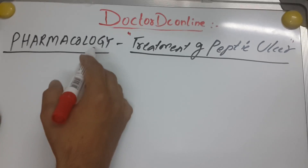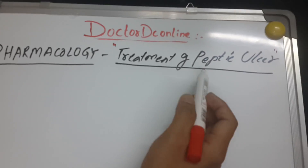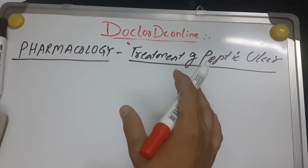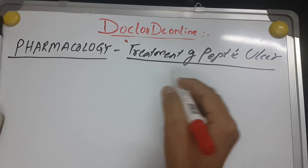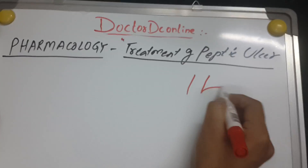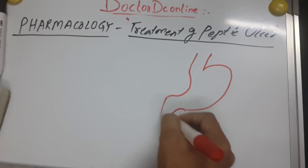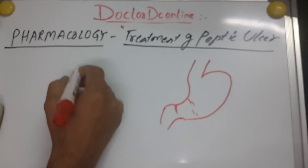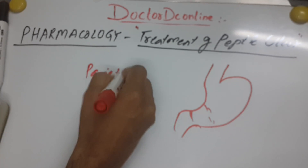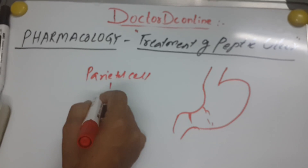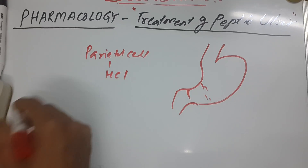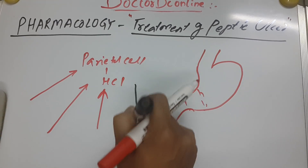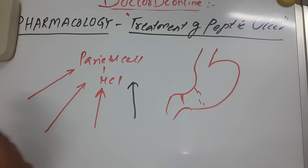Now is the pharmacology treatment of peptic ulcers — how we treat peptic ulcers. Before telling the drugs, I just want to revise how peptic ulcers occur, as I already described in previous videos. The most important cell is the parietal cell, and the function of parietal cells is the production of HCl. There are some influencing factors which stimulate and inhibit acid secretion.